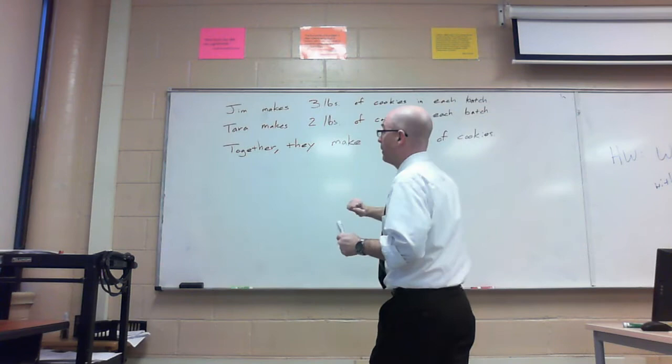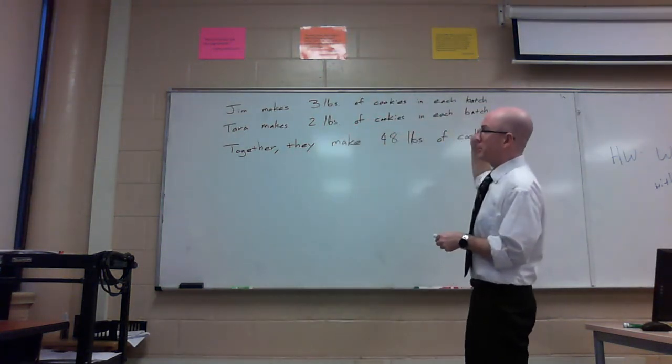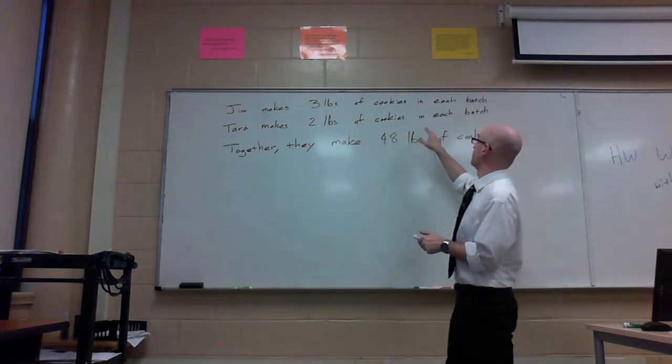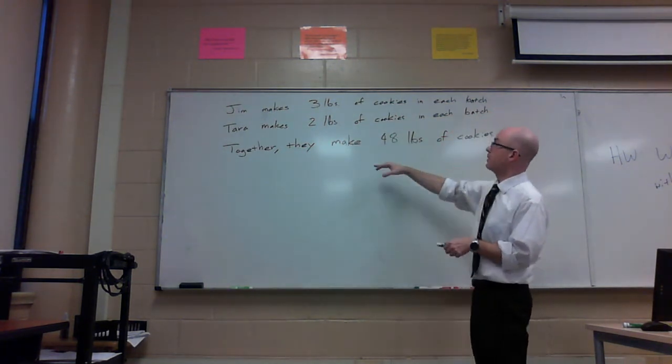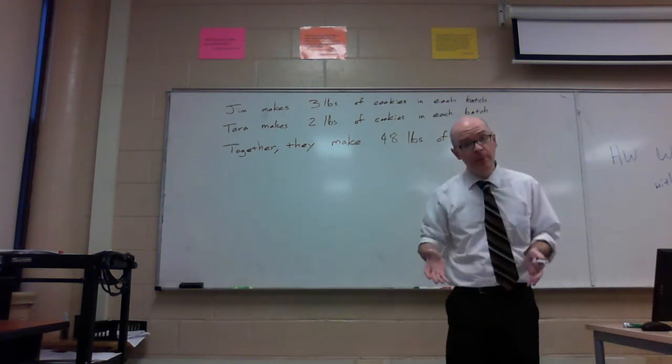So for example, let's take a look at a setup here. Jim makes 3 pounds of cookies in each batch. Tara makes 2 pounds of cookies in each batch. Together they make 48 pounds of cookies. We've got a lot of information here.